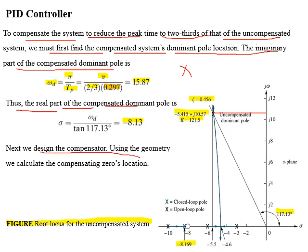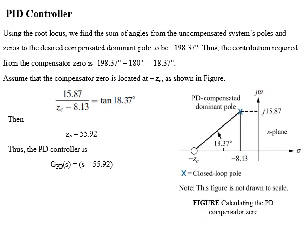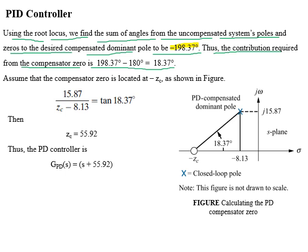To include this new design point into the root locus, we will design a PD compensator. Using geometry, we will calculate the zero location. Using the root locus angle criterion, we find the sum of angles from the uncompensated system poles and zeros to the new design point, which equals minus 198.37 degrees. Therefore, the required contribution from the compensator zero is 18.37 degrees. The location of the compensator zero is shown in the figure.